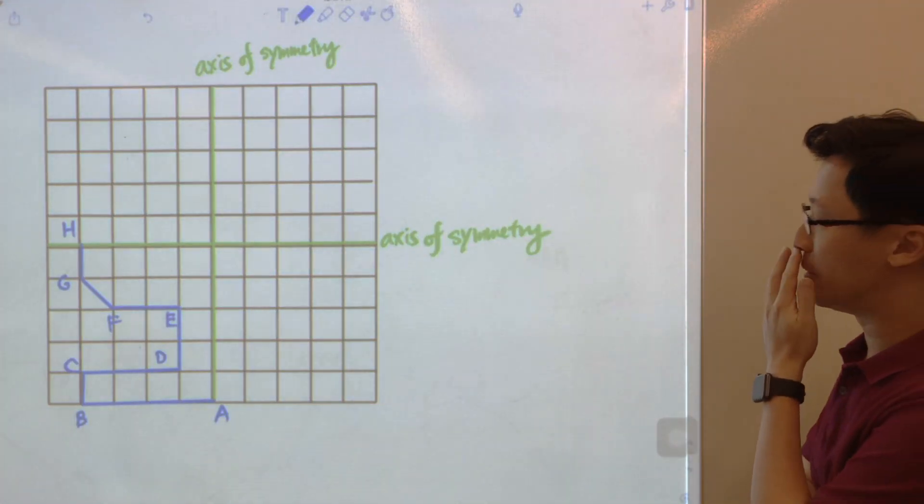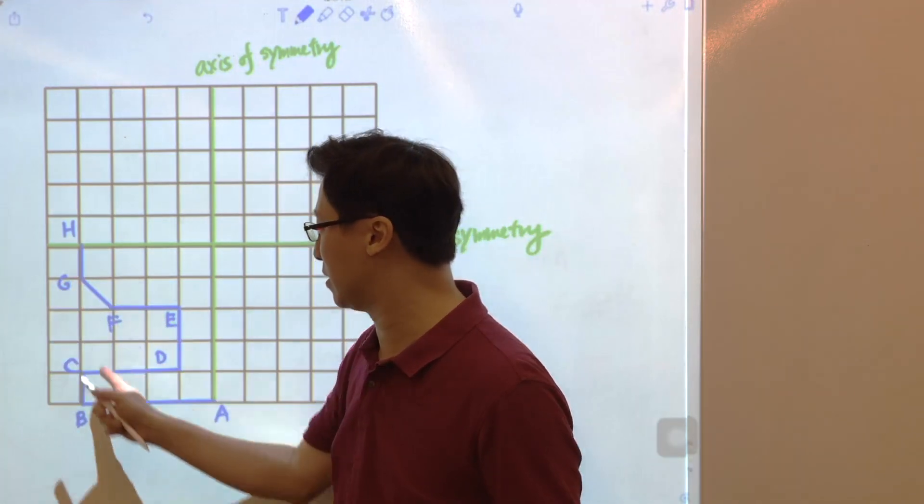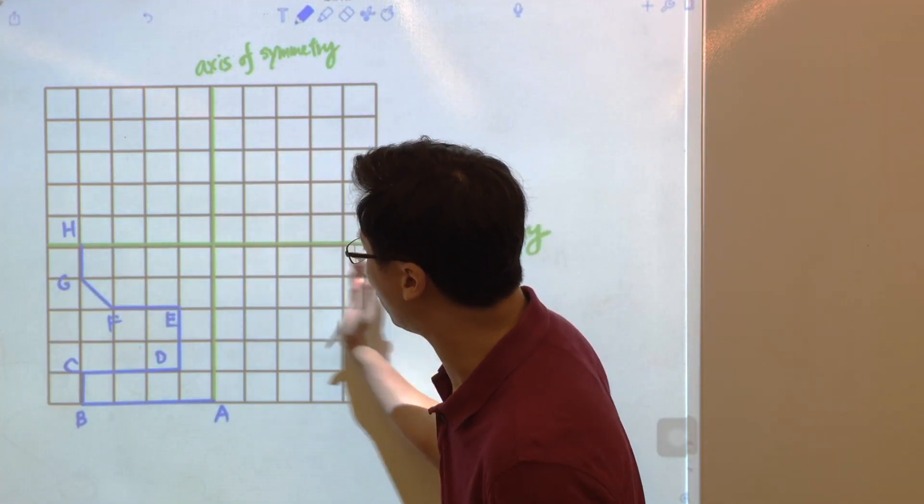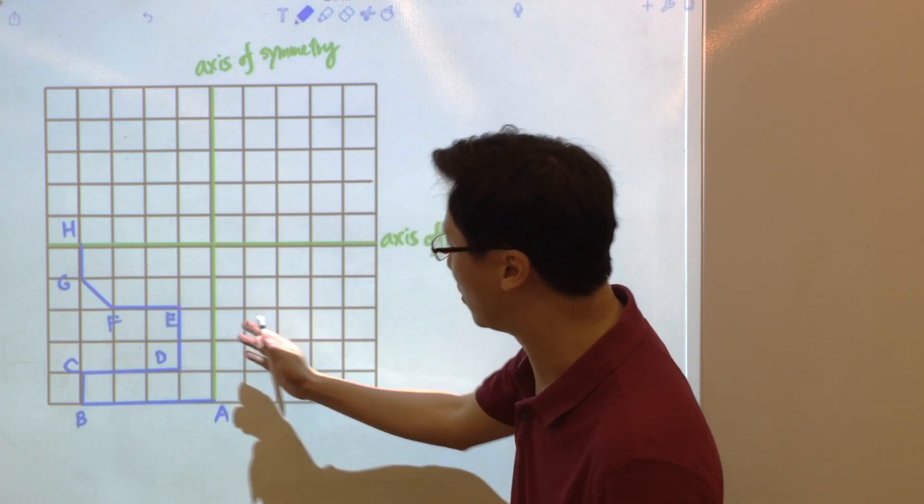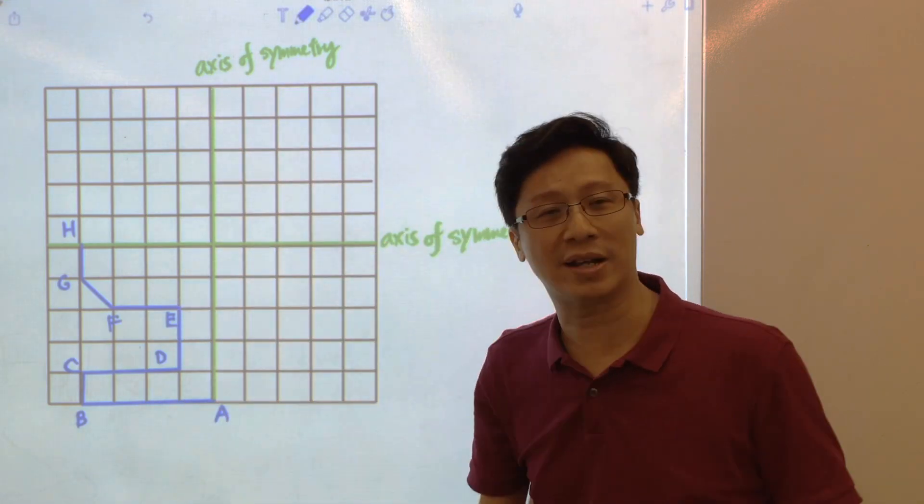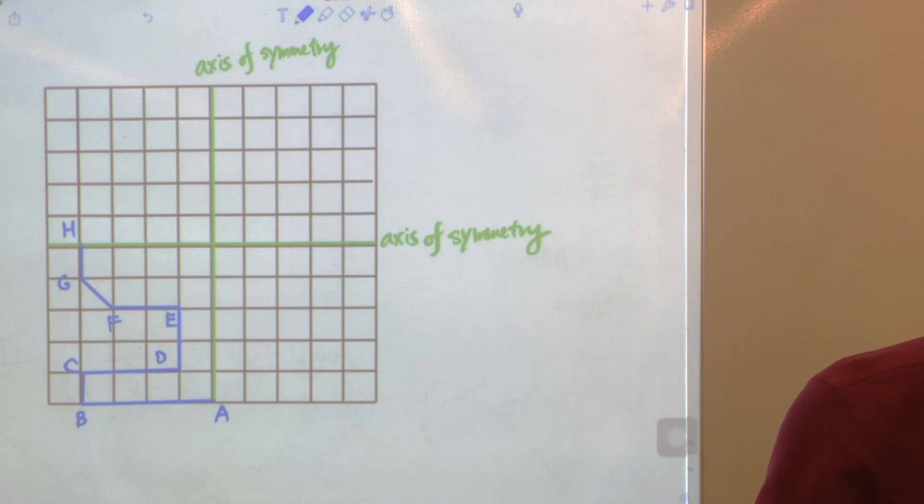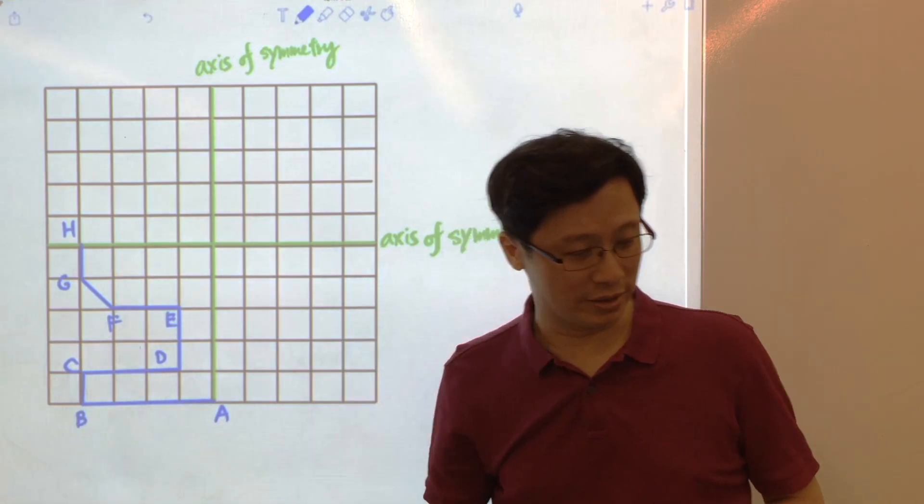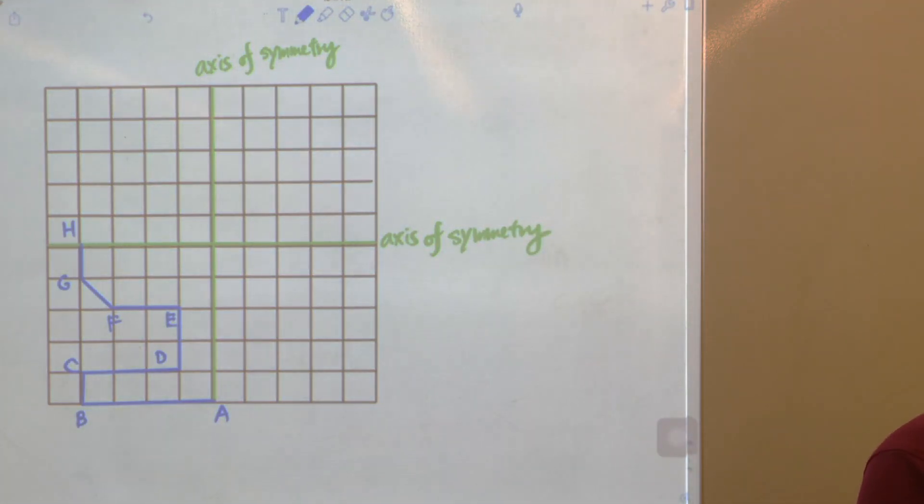And therefore we have to find the image of these vertices on the right-hand side first, the right-hand side of this vertical axis of symmetry. We can just think of this as a mirror and then we have another mirror here. So let's look at the first mirror.